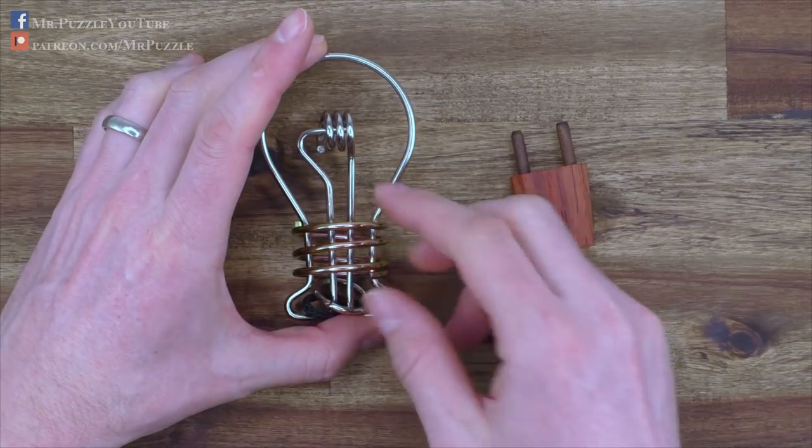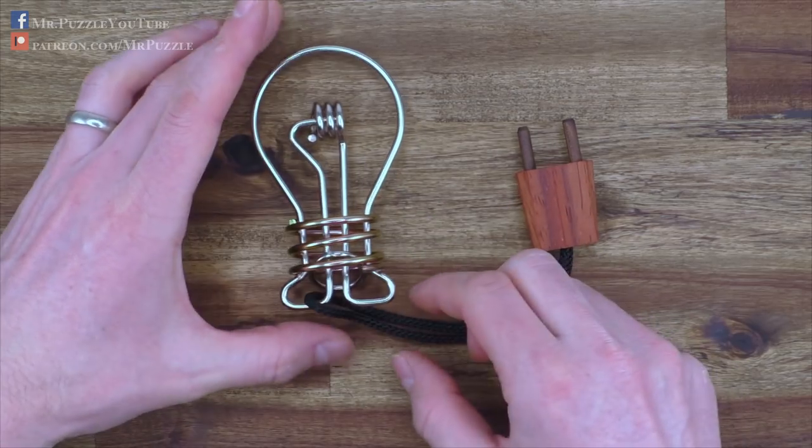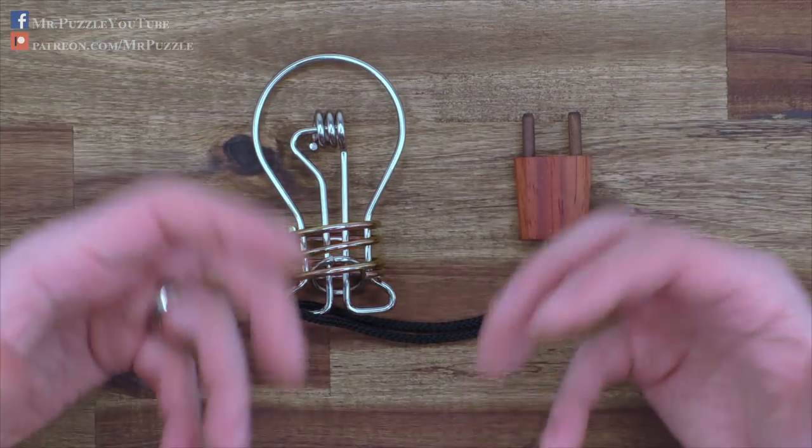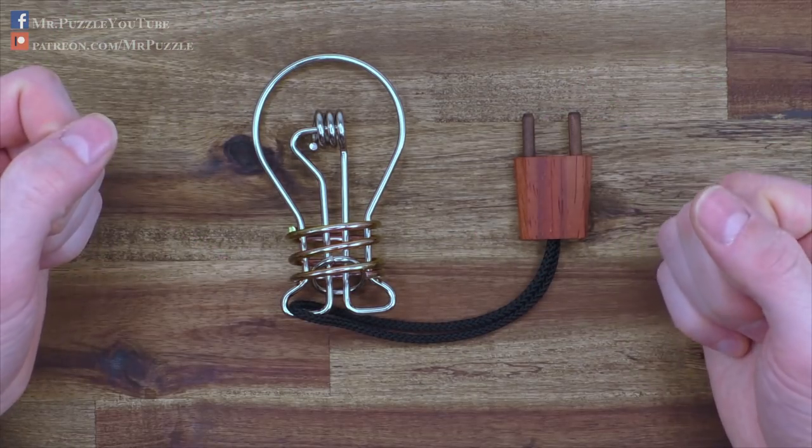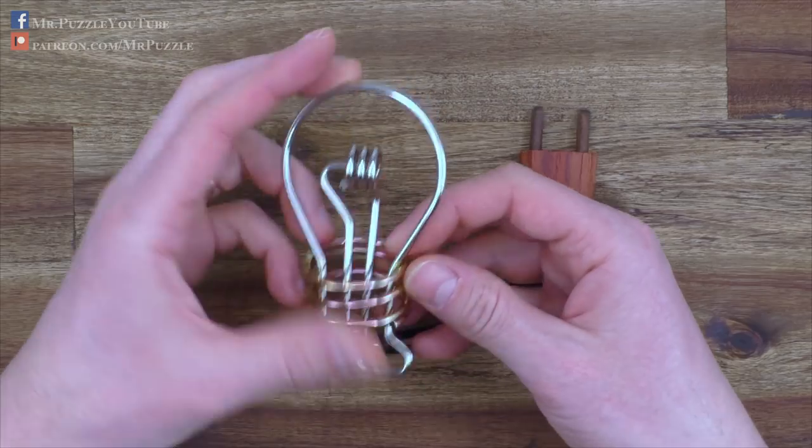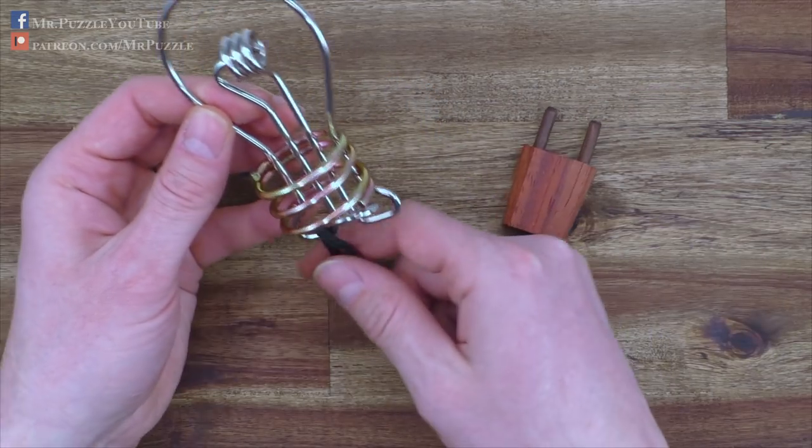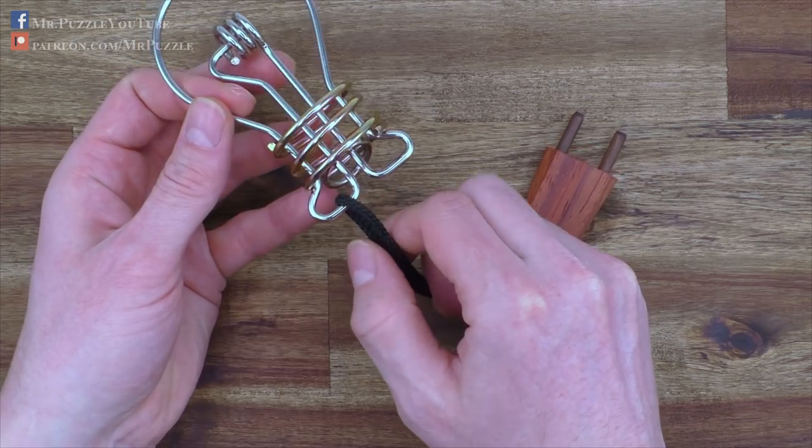As I said, there are a lot of things to confuse you, and now we have multiple ways we could go. But in the end, we need just to make the same move again as we already did. We again need to go around here, but this time, before we do it, we go here through this ring, down here.